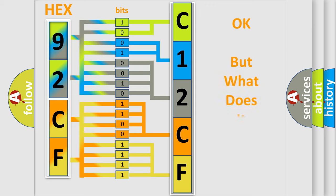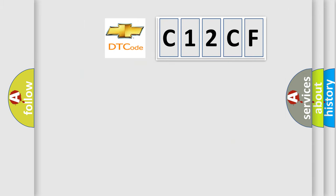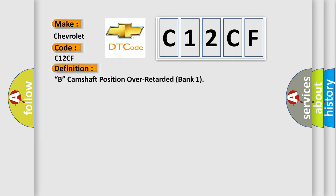The number itself does not make sense to us if we cannot assign information about what it actually expresses. So, what does the diagnostic trouble code C12CF interpret specifically for Chevrolet car manufacturers? The basic definition is: camshaft position over-retarded, bank 1.